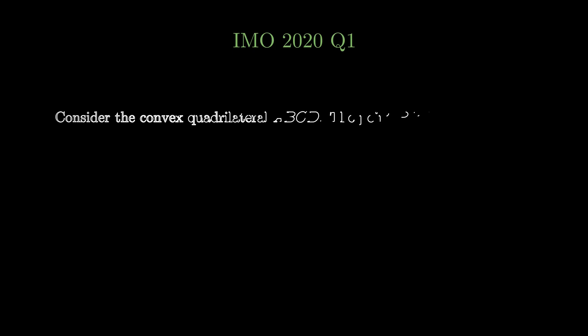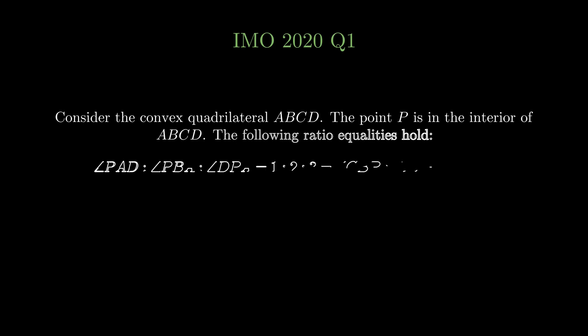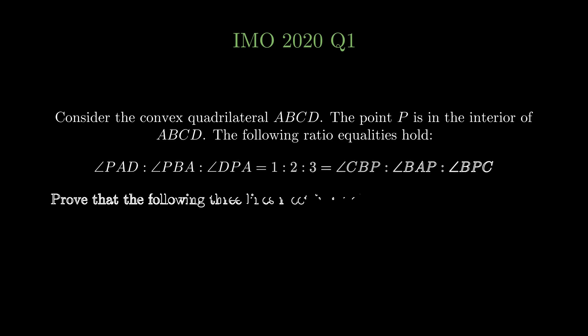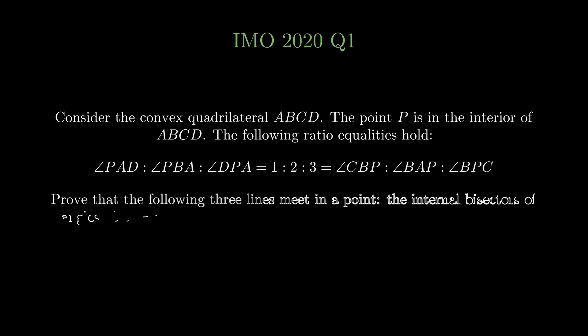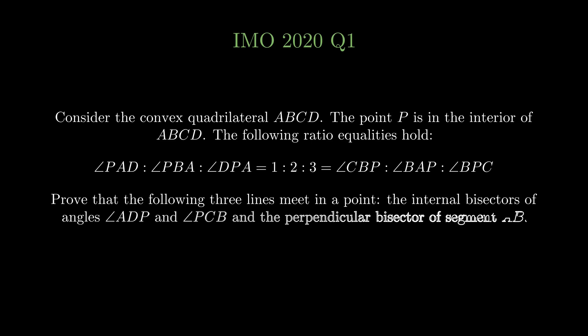IMO 2024 Problem 1 states: consider the convex quadrilateral ABCD. The point P is in the interior of ABCD. The following ratio equalities hold: angle PAD to angle PDA to angle DPA is 1 to 2 to 3, as is angle CBP to angle BAP to angle BPC. Prove that the following three lines meet in a point: the internal bisector of angles ADP and PCB, and the perpendicular bisector of segment AB.